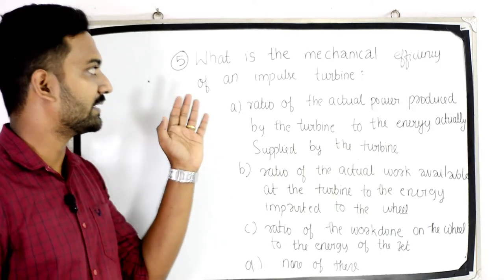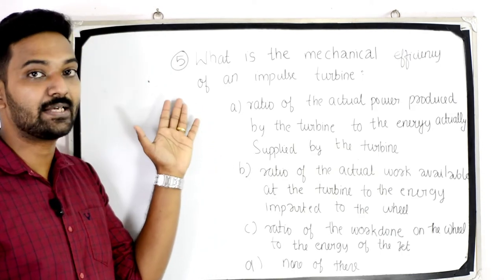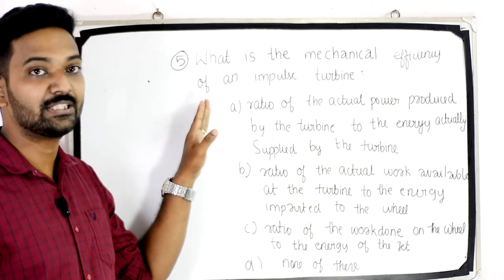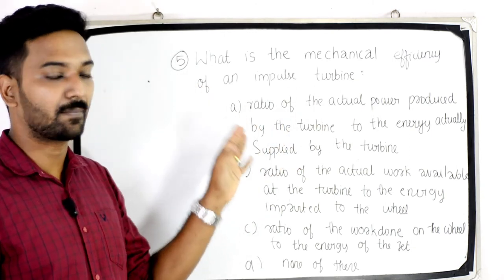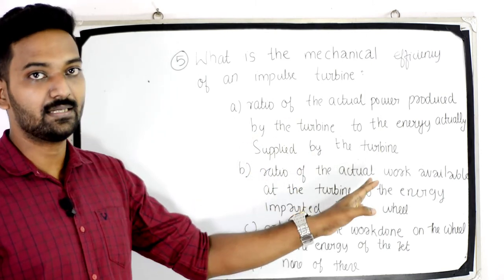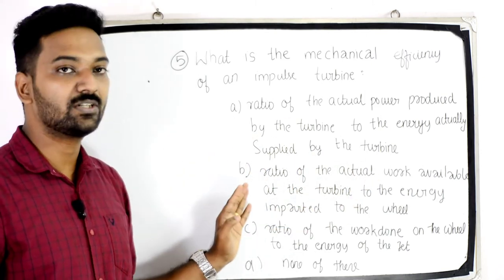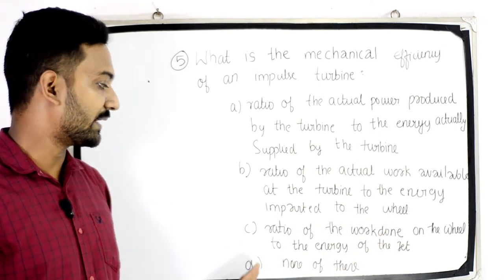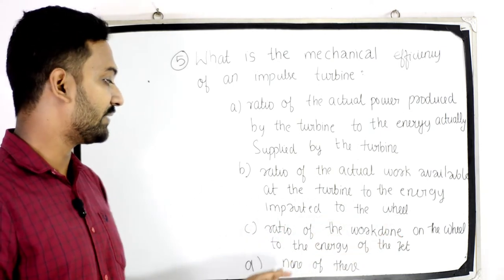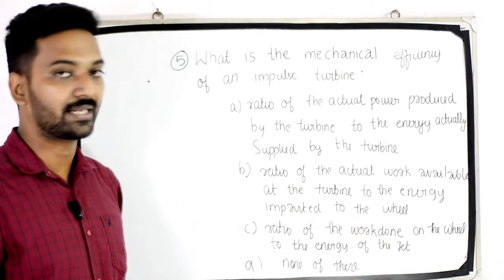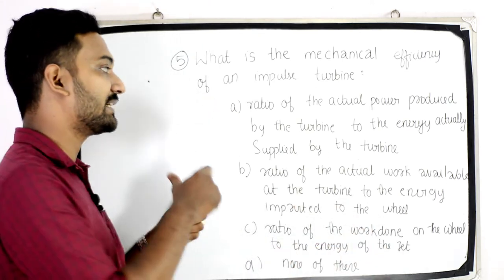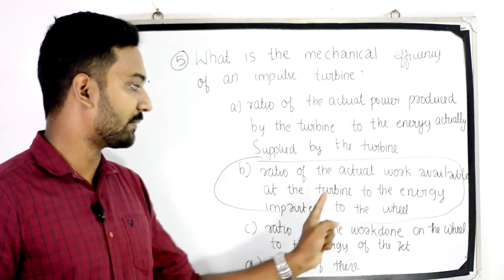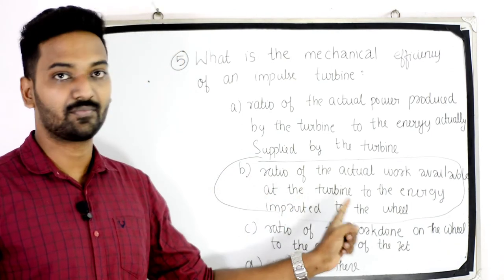The fifth question is: what is the mechanical efficiency of an impulse turbine? Options: ratio of actual power produced by the turbine to the energy actually supplied by the turbine; ratio of actual work available at the turbine to energy imparted to the wheel; ratio of work done on the wheel to the energy of the jet; or none of these. The answer is: ratio of actual work available at the turbine to the energy imparted to the wheel.